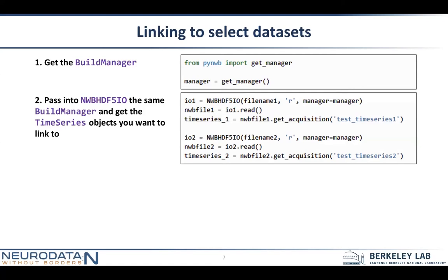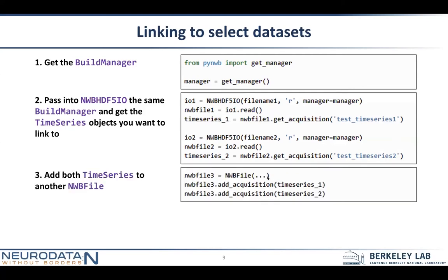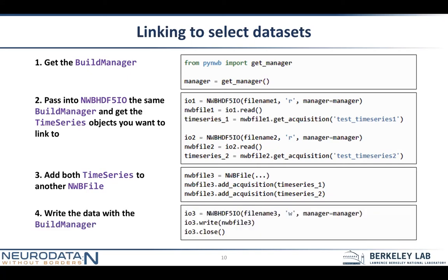Let's say we have two files — file one, file two. When we read them, we have to pass in the same manager. Then let's get our time series objects that we're going to try to link into a master file. We create this master file, a new NWB file, and add these two time series objects as acquisition to that file. When we go to write that file, we have to pass in this build manager that we used for reading the two time series we want to link to. The key takeaway is that you have to pass in the manager throughout the process. NWB file three will now have a link to these two time series objects in its acquisition folder.